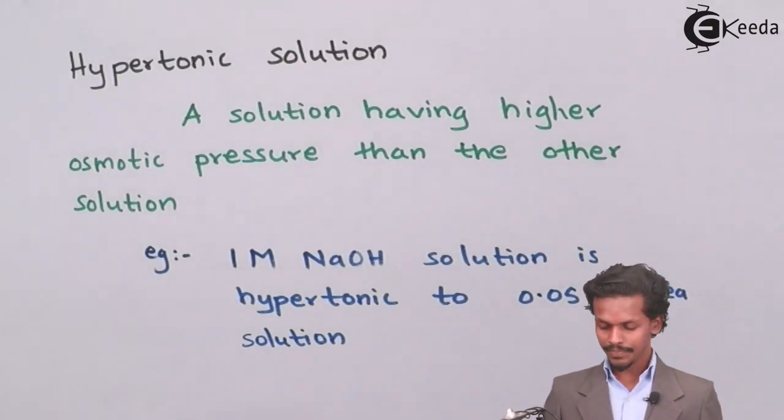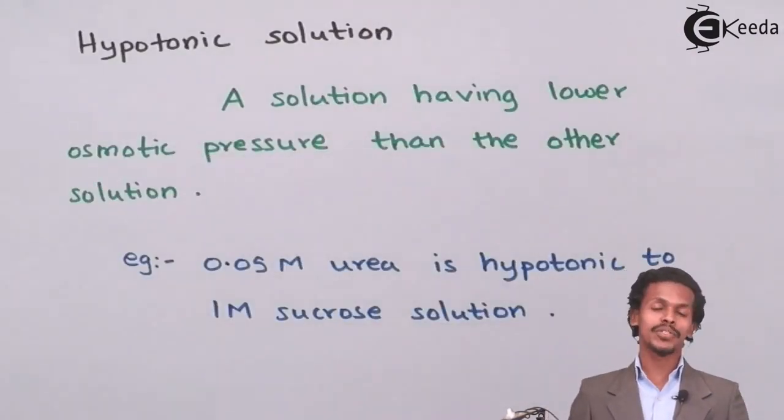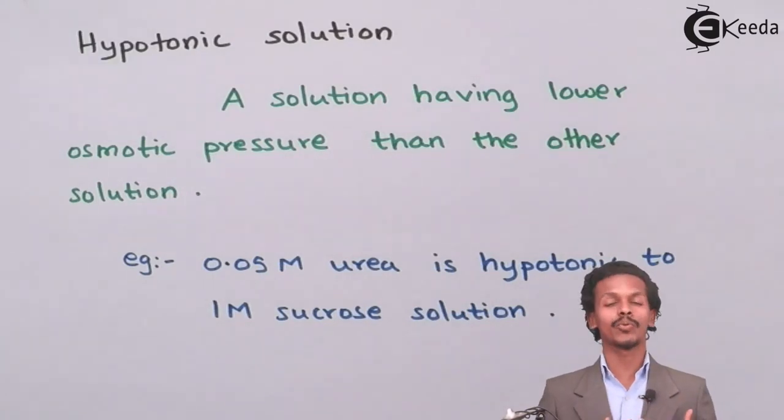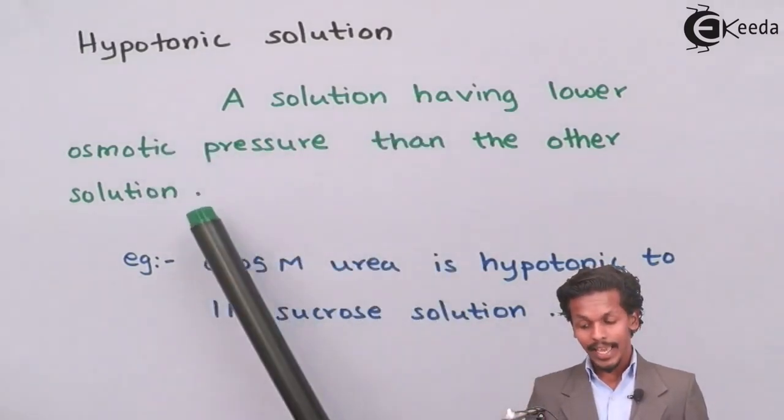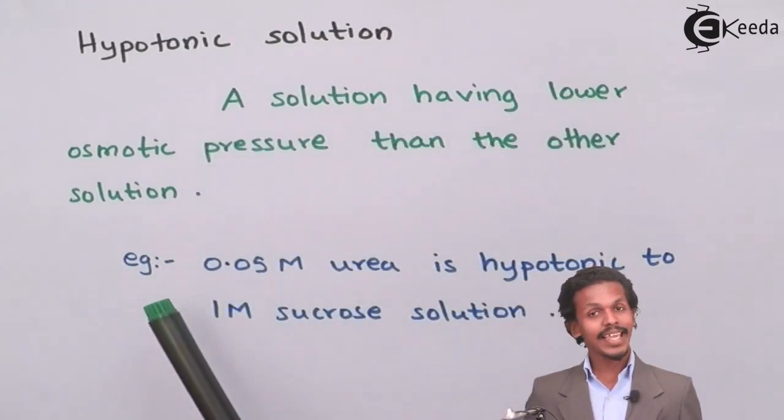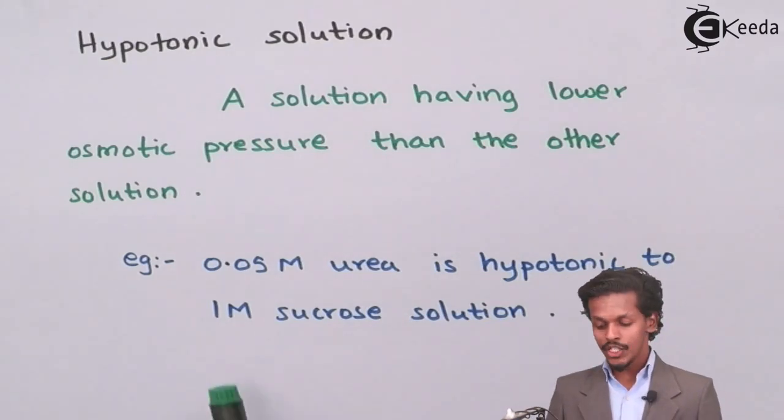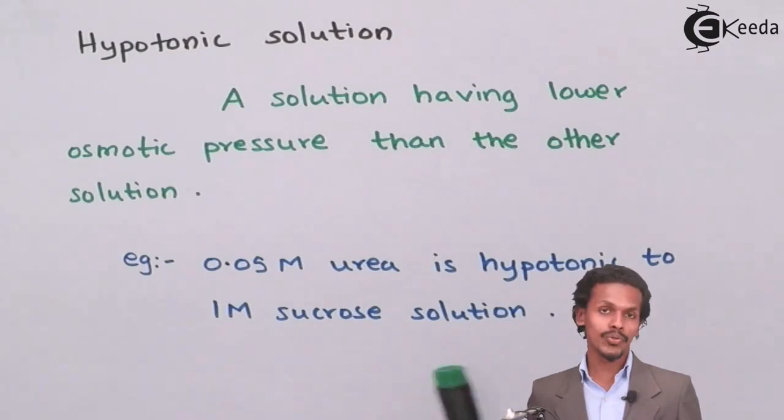Moving towards the next and the last one: hypotonic solution. Hypo itself suggests it has a lower value compared to the other one. Hypotonic solution means a solution having lower osmotic pressure than the other solution. The example given is 0.05 molar urea is hypotonic to 1 molar sucrose solution.